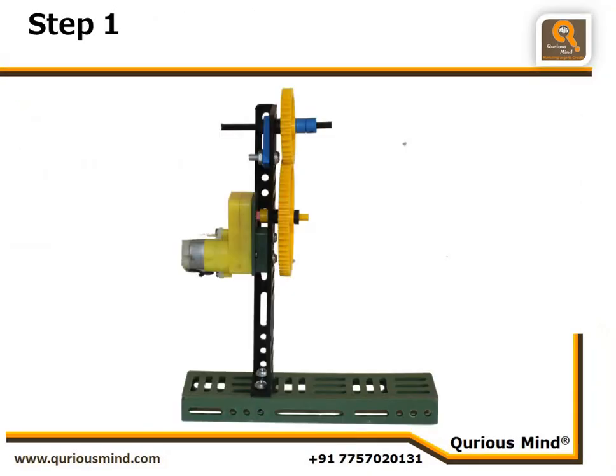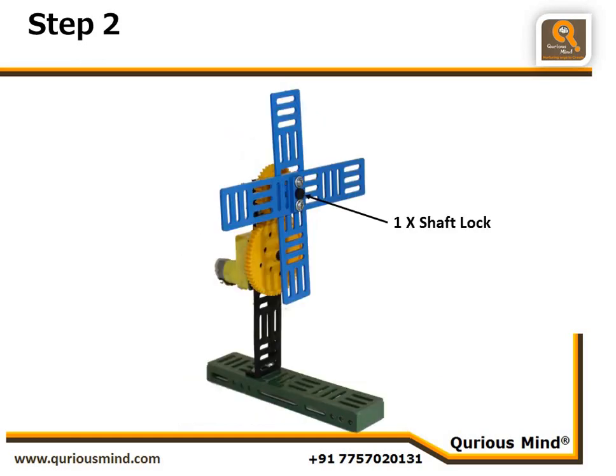So let's first see how to convert the windmill into a fan. It's very simple: remove the blade assembly from your big gear and then interchange the position of the gears — put the big gear onto the motor and the medium gear onto the axle. Finally, put the blades back onto the medium gear axle and lock it with a shaft lock. Now try and see — your windmill is rotating fast, so it is no more a windmill, it has become a fan!